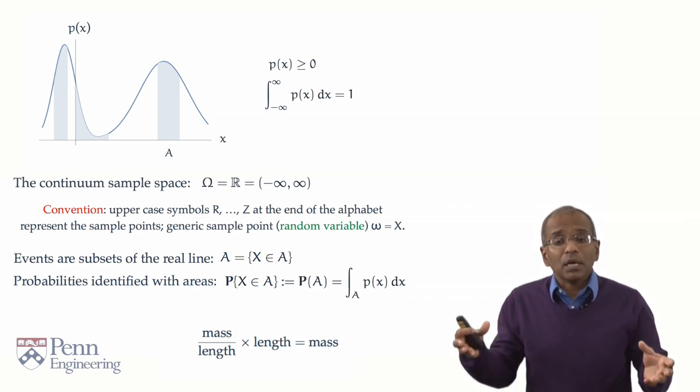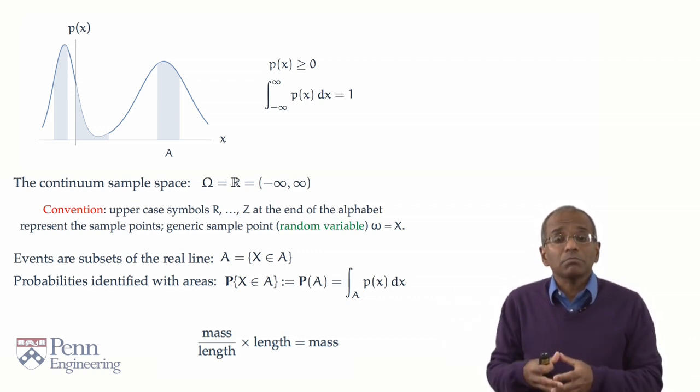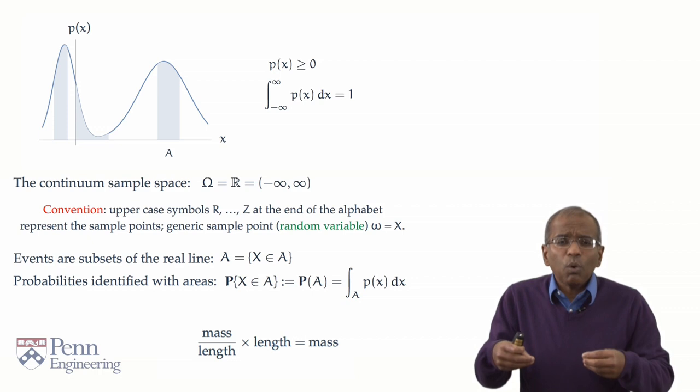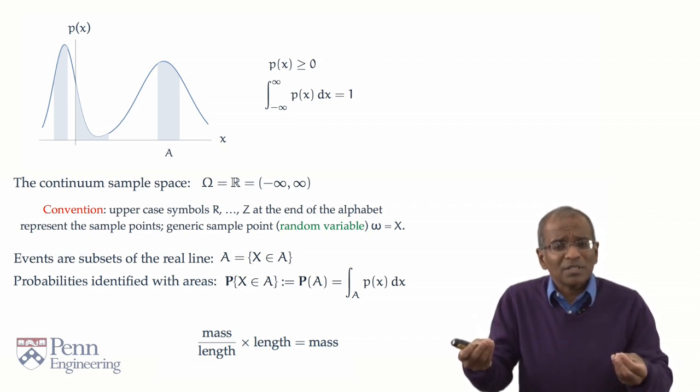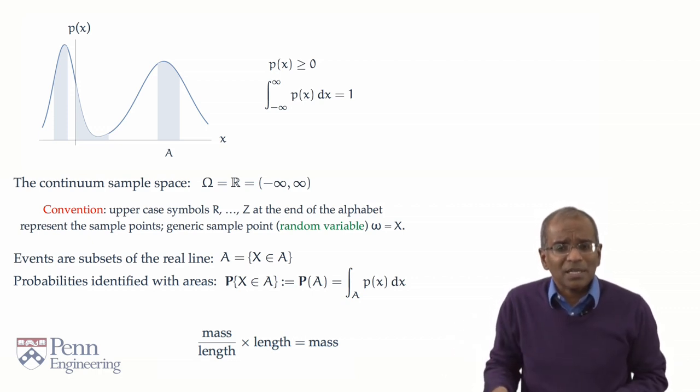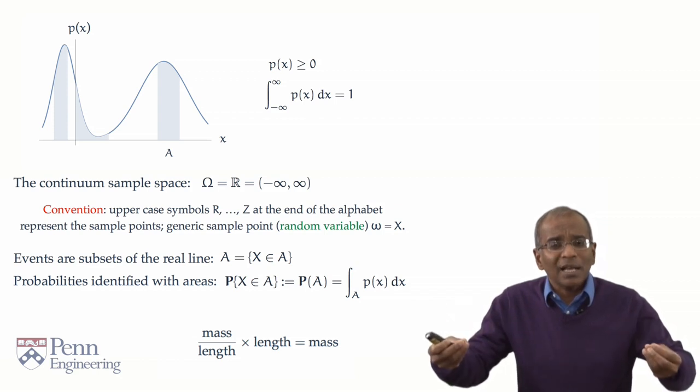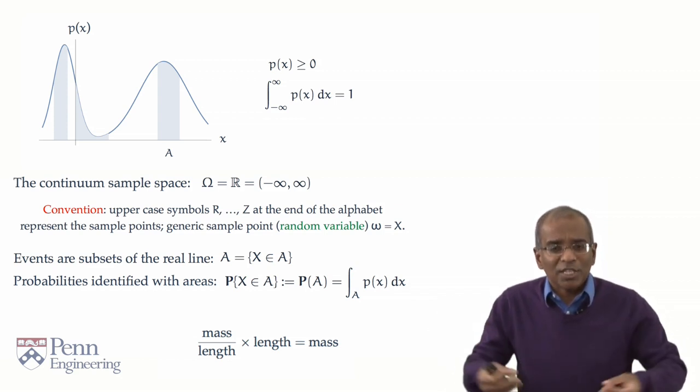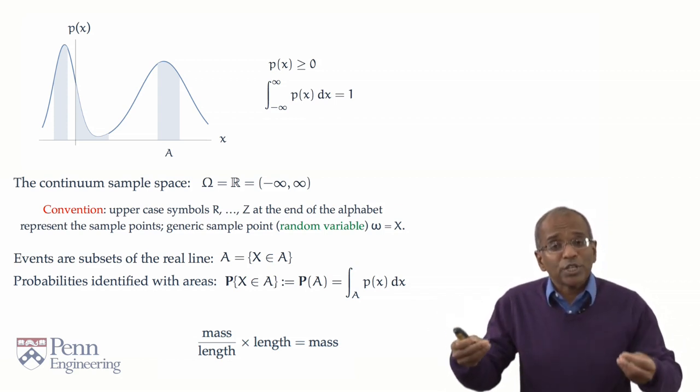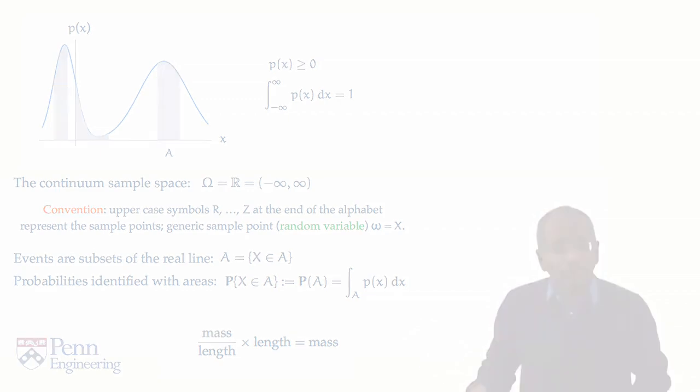Naturally, a question now is, at this level of abstraction, this is all well and good. But what kinds of functions represent densities in practice? What kinds of functions arise of real chance experiments? We shall turn to this next.